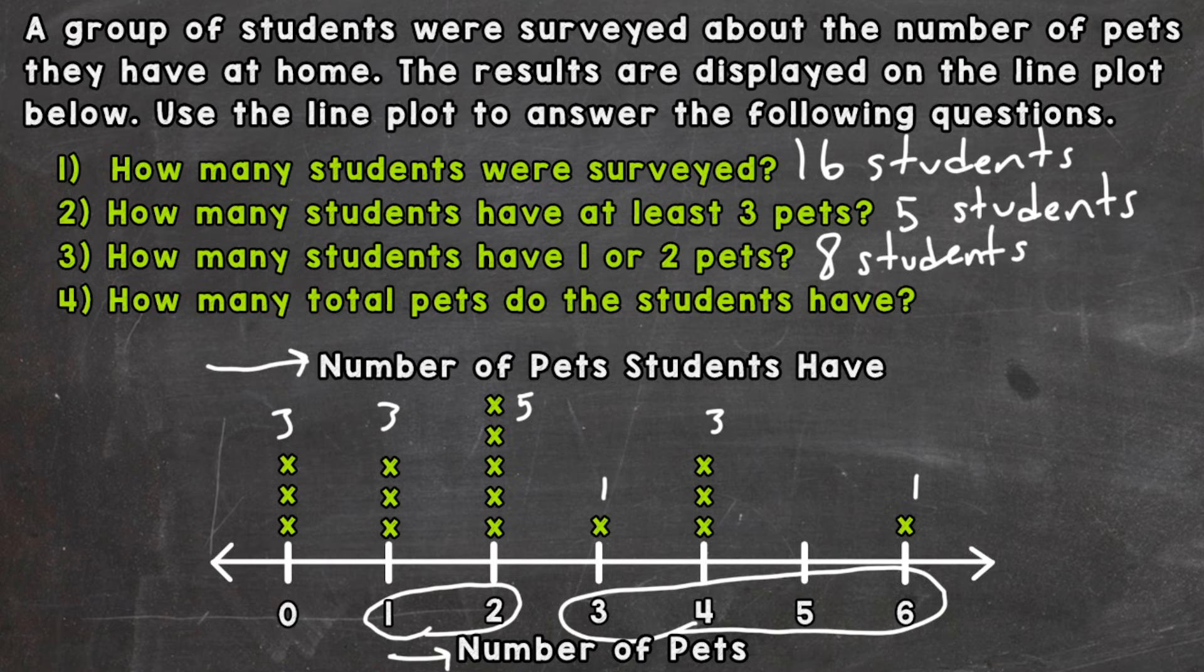And lastly, this is probably the most difficult question out of the four. How many total pets do the students have? This is not a matter of just counting up all of the x's. Because each x, for example, right here, each x holds a value of zero. Because each of those students have zero pets. So this is zero right here. This is going to be worth zero for that question.